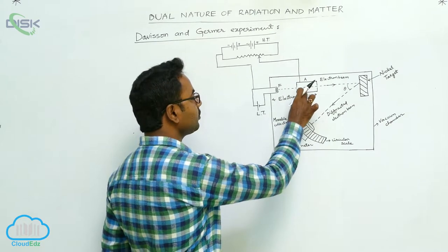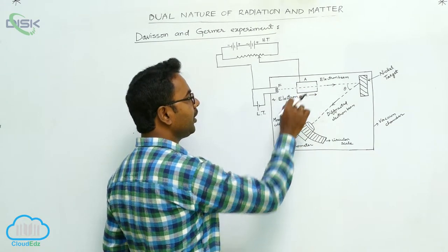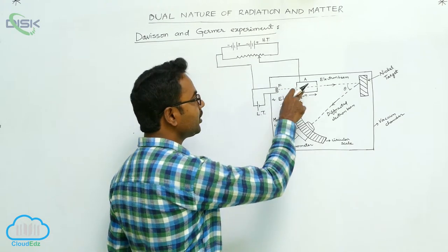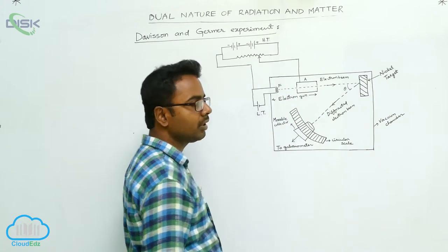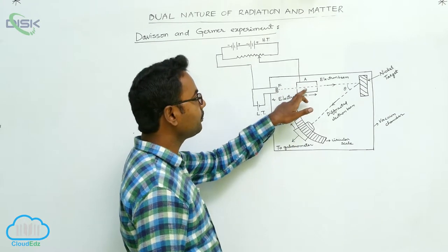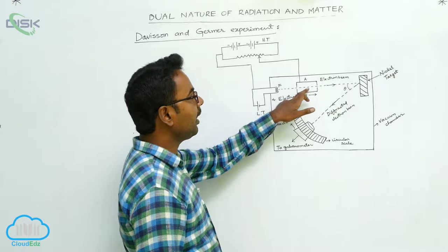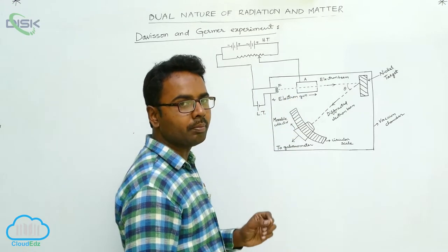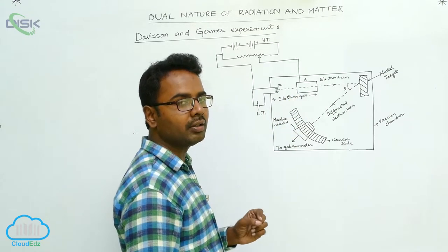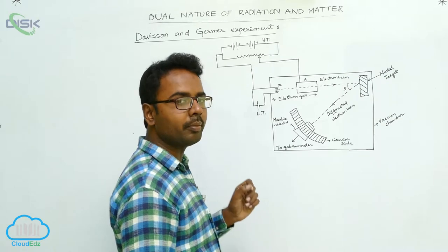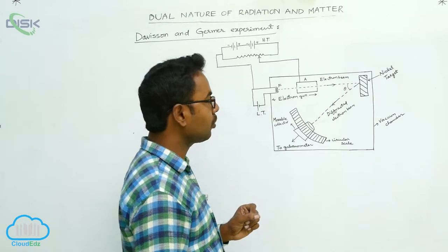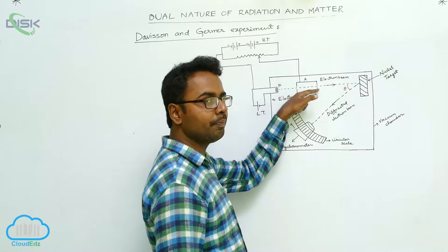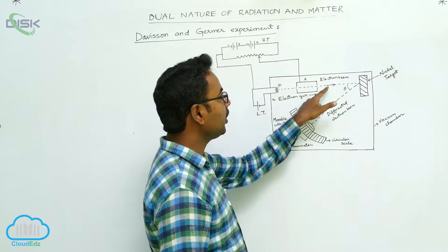A is having fine holes. Whenever the electrons pass through these fine holes along the axis of A, the electrons become an electron beam — a collimated fine beam of electrons is obtained when electrons are allowed to pass through the holes of A.